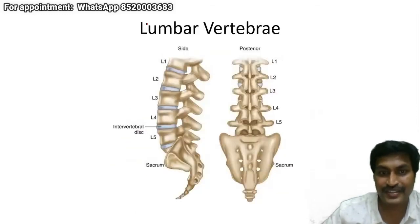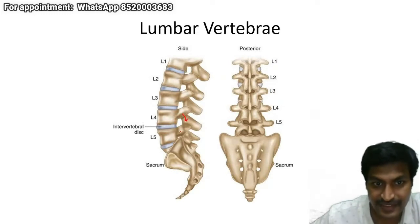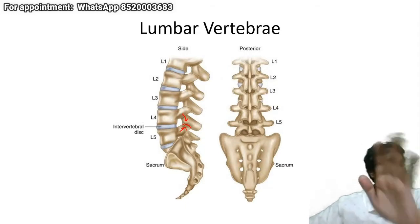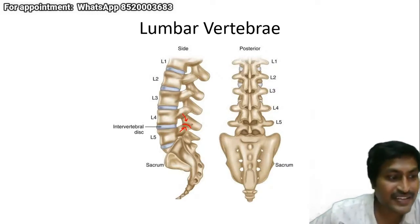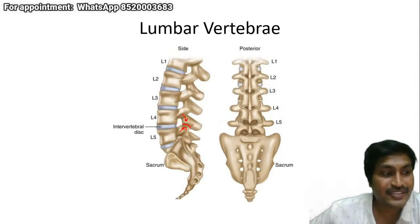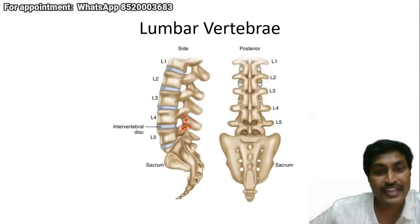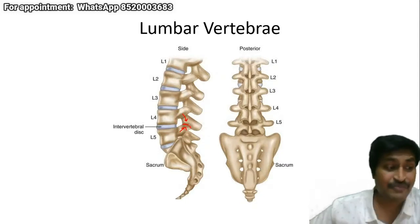So what I was telling you is this junction — see, this is the superior articular facet, this is the inferior articular facet, this is the superior articular facet. This junction is known as the pars interarticularis. This portion is where the pars interarticularis is. I'm telling you repeatedly because this is very important. Every physiotherapist should be able to identify what is the pars interarticularis. As Dr. Sandish has told, the Scottish dog — that is a classical MCQ exam question.